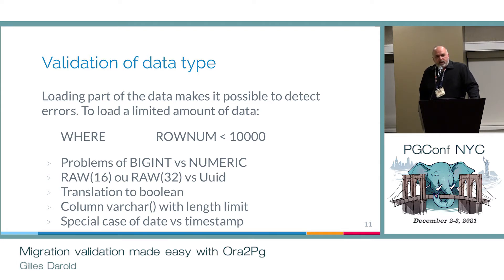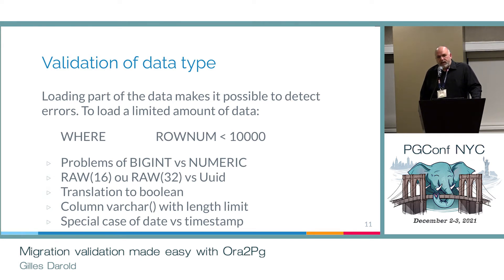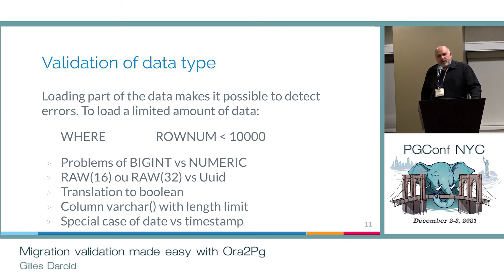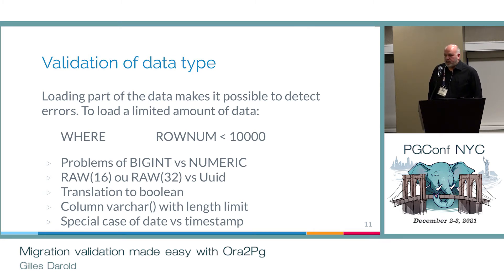In Oracle there is a data type called NUMBER which corresponds to integer or to numeric if there is a precision or scale. Most tools migrate those numbers without precision into numeric, which allows importing the data without error. The problem is that if most of your primary keys are numbers and you transform them into numeric, you will have a performance issue. So the choice of ORA2PG is to import them as bigint. So if it is a real numeric data column, you will have an error when you insert a number with a decimal, which allows you to detect the data types that need to be changed.